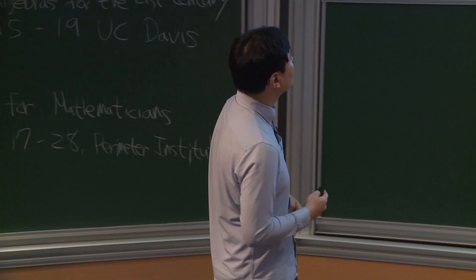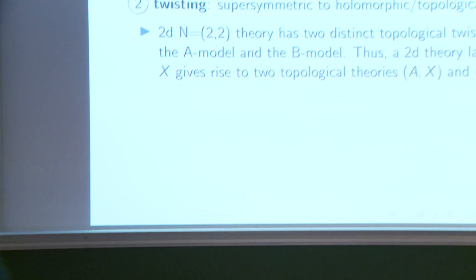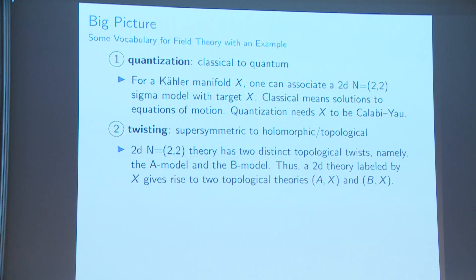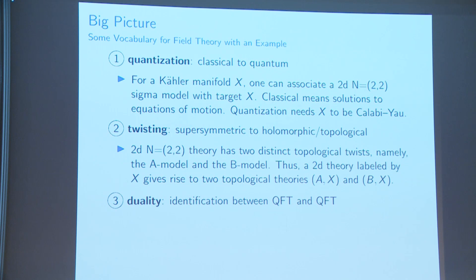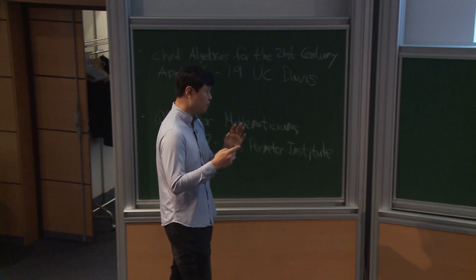Given a Calabi-Yau manifold X, it defines two different topological theories, denoted AX or BX. Third, duality: by duality I mean an identification between two different-looking QFTs, where anything you can reasonably extract from the QFT should be identified. The example here is mirror symmetry — for a given Calabi-Yau manifold, there is a dual Calabi-Yau such that AX is basically the same as BX-check.